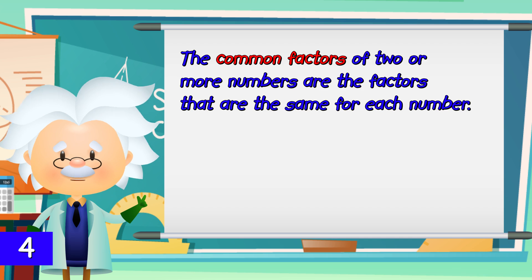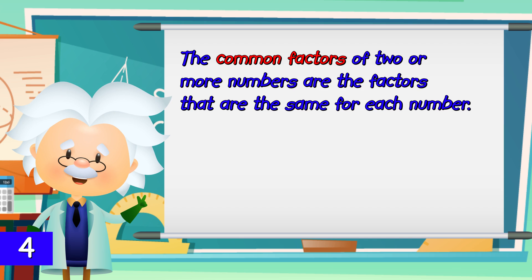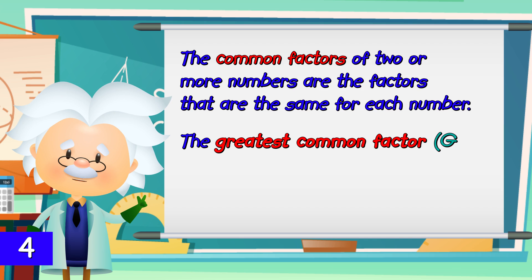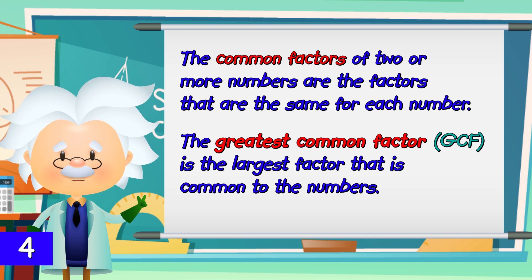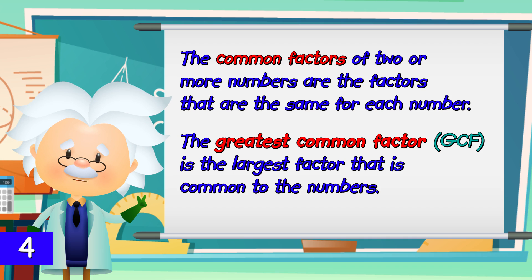The common factors of two or more numbers are the factors that are the same for each number. The greatest common factor, or GCF, is the largest factor that is common to the numbers.